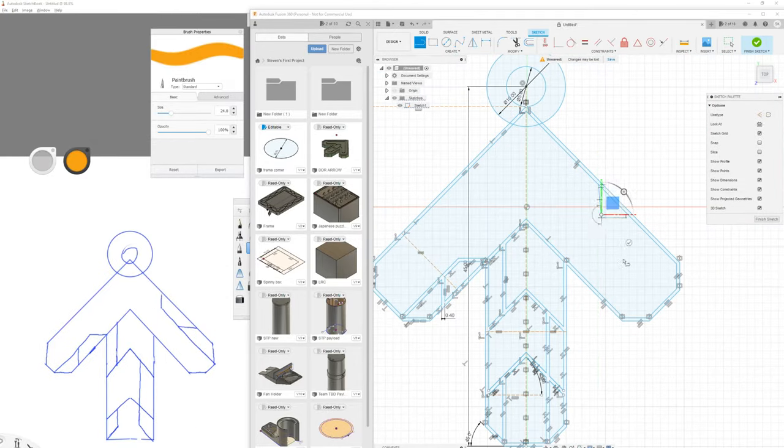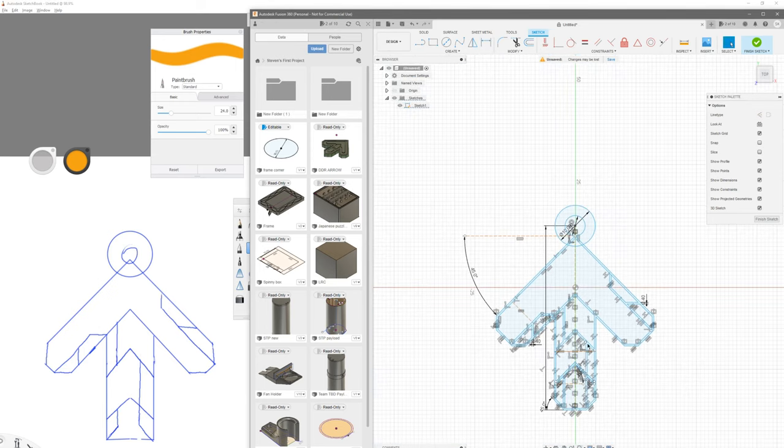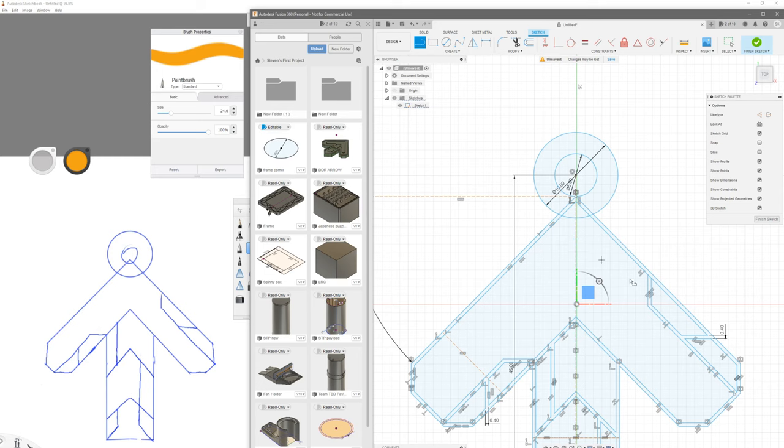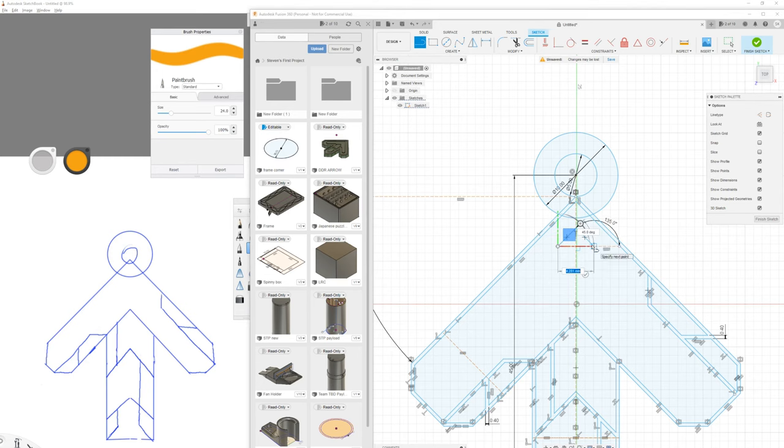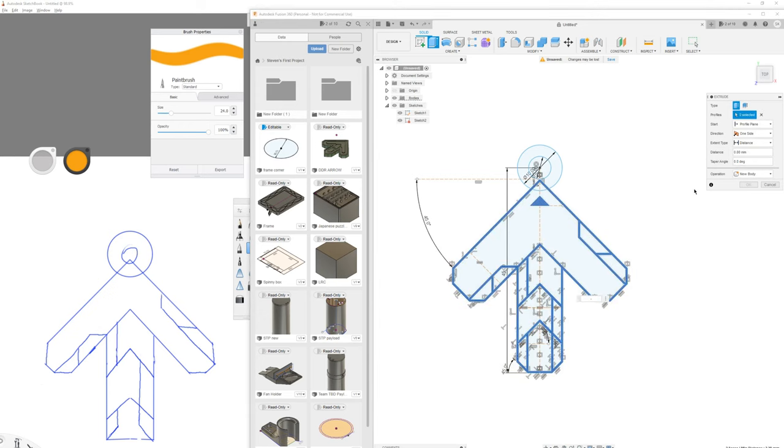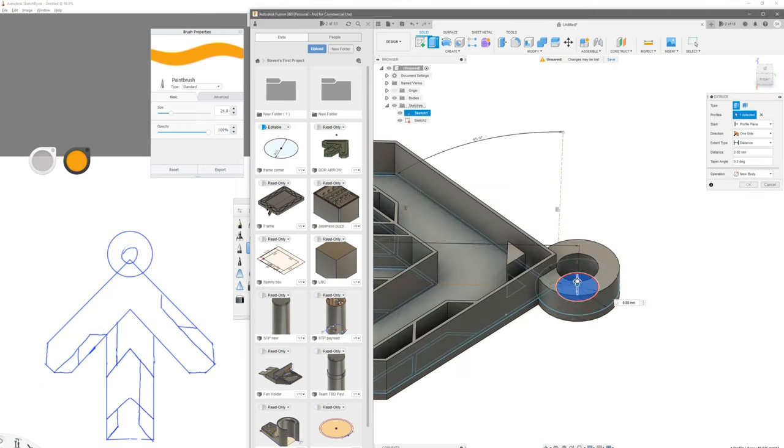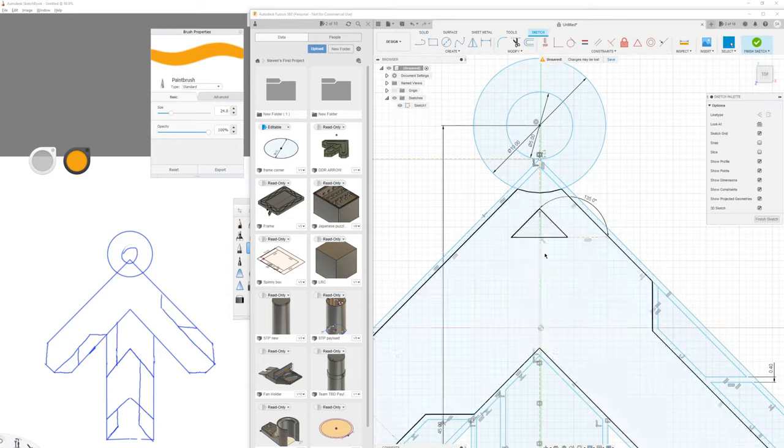Whenever you're using the offset tool, the trim and extension tool, in order to make your sketches clean and make them bound regions in order to be extruded and also for indicating the different regions of color, the trim and extension tools are good just to keep your sketch clean.